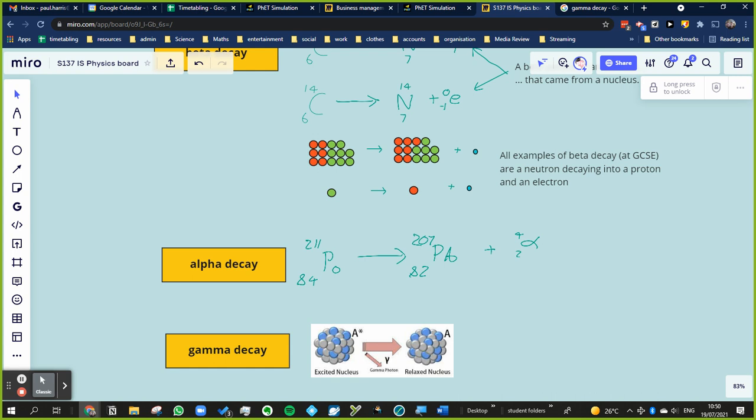This is one of the unstable isotopes of polonium. And after a random period of time, it decays on its own spontaneously into lead. And when you look at lead,